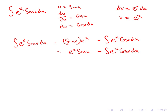So it might seem that we have not made much progress, as in our integral for eˣ sin(x) dx we have derived an integral for eˣ cos(x) dx. However, remember this is what we originally started out with. So now by substituting in this value for the integral of eˣ sin(x) dx, we can come up with an algebraic expression for the integral of eˣ cos(x) dx.